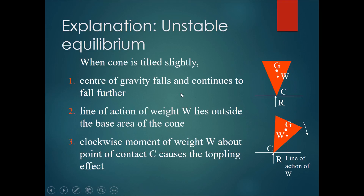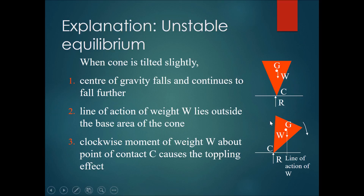This is the explanation of an unstable equilibrium. When a cone is tilted slightly, the center of gravity falls a little bit. Because the weight lies outside the current base, which is the small point, there will actually be a moment created — a clockwise moment pulling downwards. Therefore, this causes the cone to topple and move away from its original position. When you tilt something a little bit, it continues moving further away from its original position when you let go.